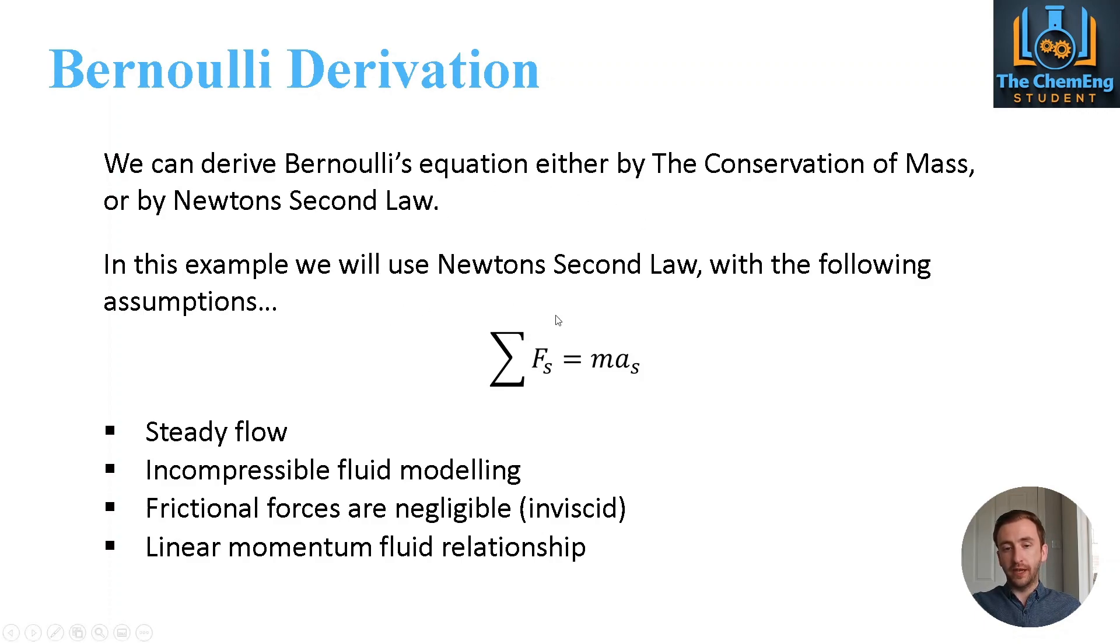Now another assumption would be the frictional forces are negligible. So what we're seeing here is we have an inviscous system. So we can neglect any frictional forces which basically opposes the direction of flow. So if our flow was going from left to right, the frictional forces would act in the opposite direction. And then finally, we have to assume a linear momentum fluid behaviour.